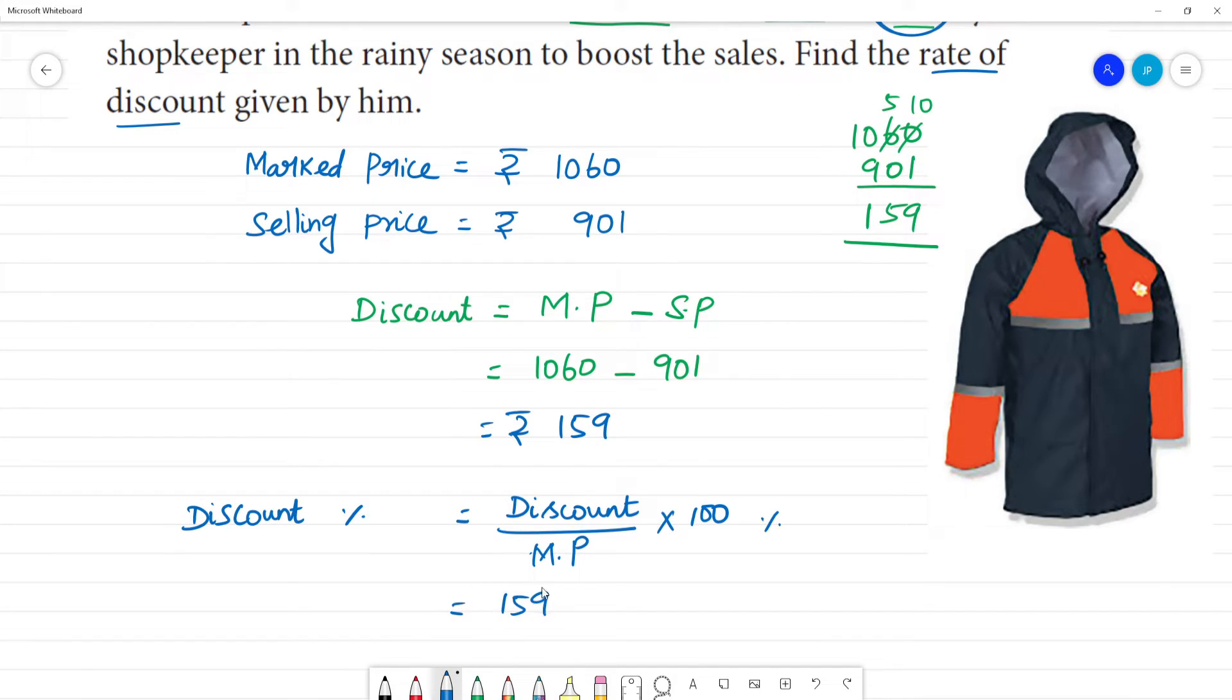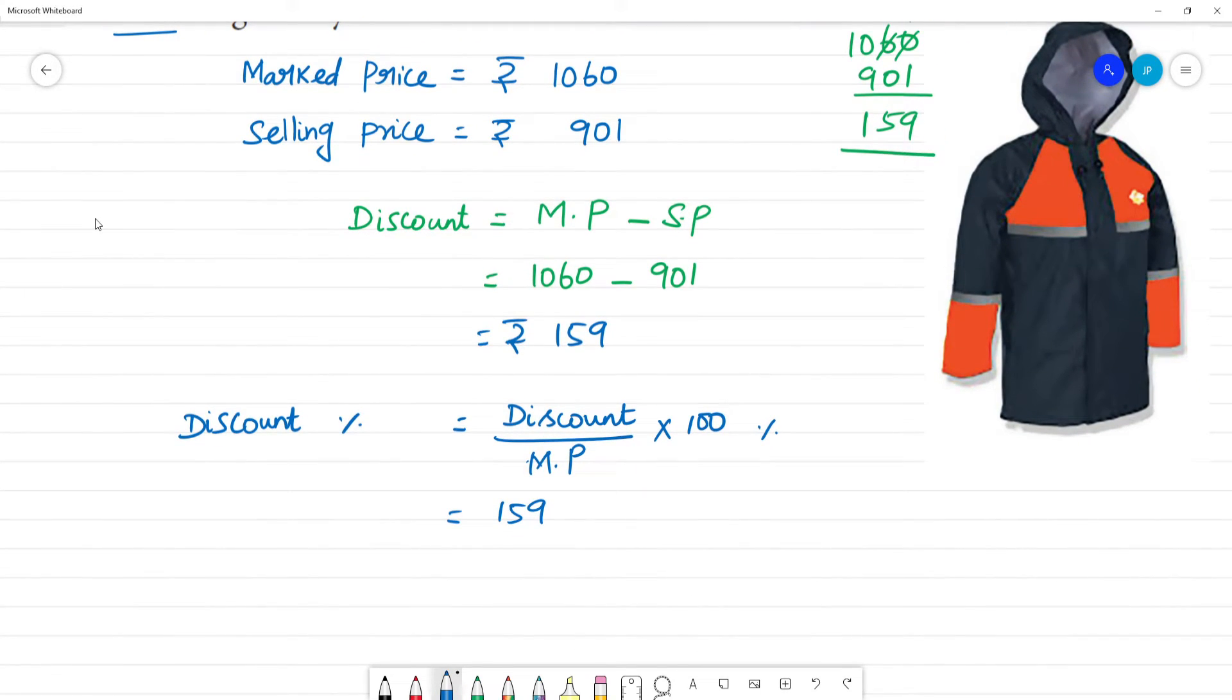Discount is 159 rupees, marked price is 1060, multiplied by 100. Next number cancel, this is 1.